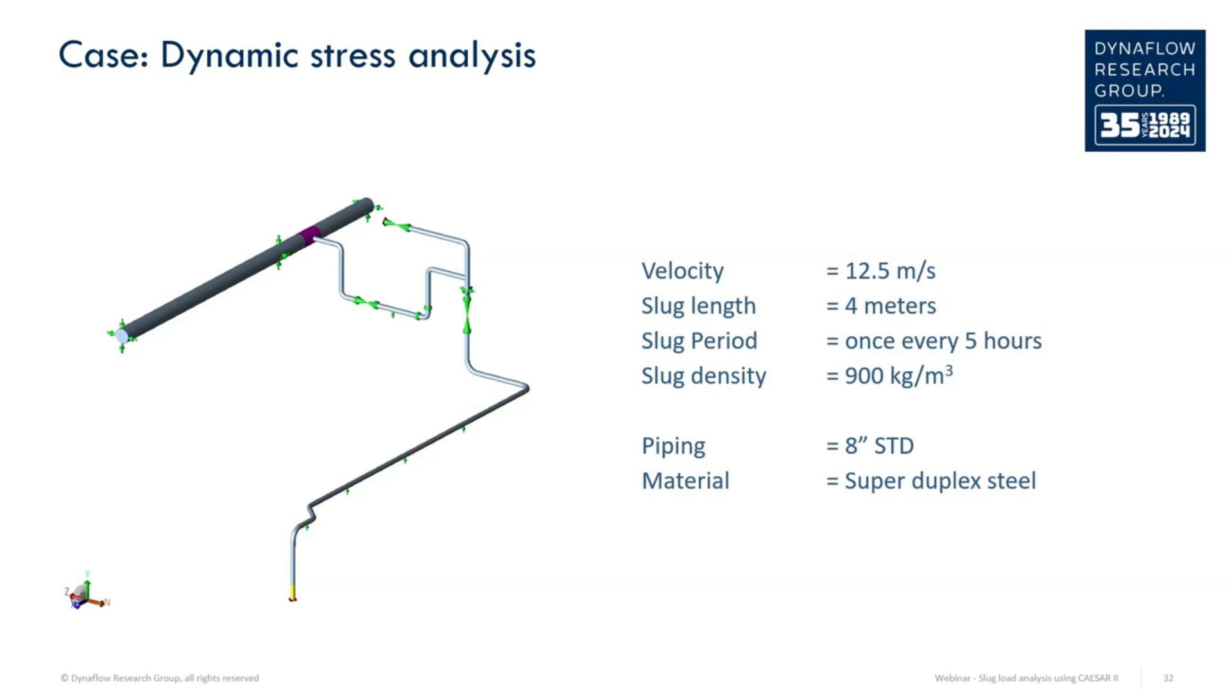As the speed with which the slug is traveling in the system is known as well, a time history of the slug traveling through the system can be created. Each of the elbows in the analysis experiences a force in two directions due to the slug at different times. It is possible to enter this information in CSR2 and run a dynamic analysis.